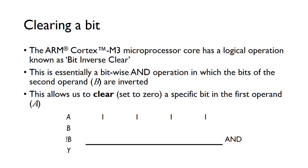In a microcontroller that contains an ARM Cortex-M3 microprocessor, there's a logical operation known as Bit Inverse Clear. This is essentially a bitwise AND operation, but the bits of the second operand B are inverted.